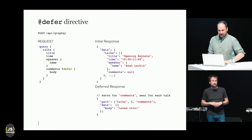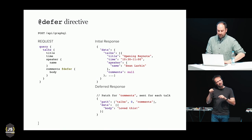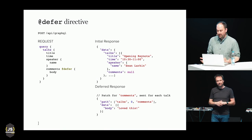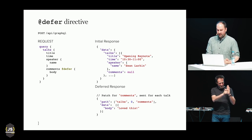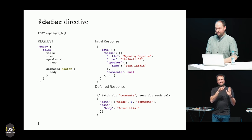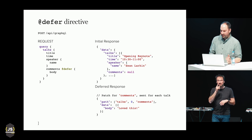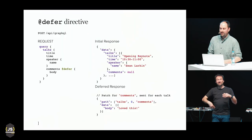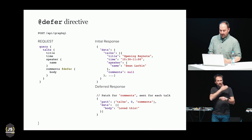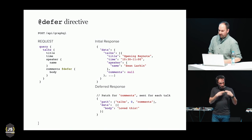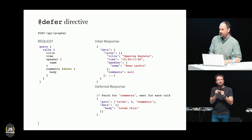Here's what the deferred directive looks like. We added the deferred directive to the comments field because it's slow to load comments in our app. Now there are multiple responses — in the first response, the comments are null, sent as soon as all the data except the comments is finished loading. Once the comments are loaded, a new response called a patch response is sent, since it's meant to be applied to the previous response. The patch response is a JSON object with a path array indicating where in the initial response it gets applied, and a data field with the actual data.